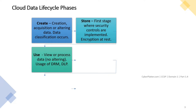Next is the use phase. Viewing and processing of data is considered in this phase. In the cloud data lifecycle, modifications are not covered in the use phase — the use phase is considered read-only, and modifications are covered in the create phase. Data in use is the most vulnerable for misuse or leakage, as the data must be unencrypted while in use. Data loss prevention, digital rights management, logging and monitoring, and file access monitoring are security controls to consider here.